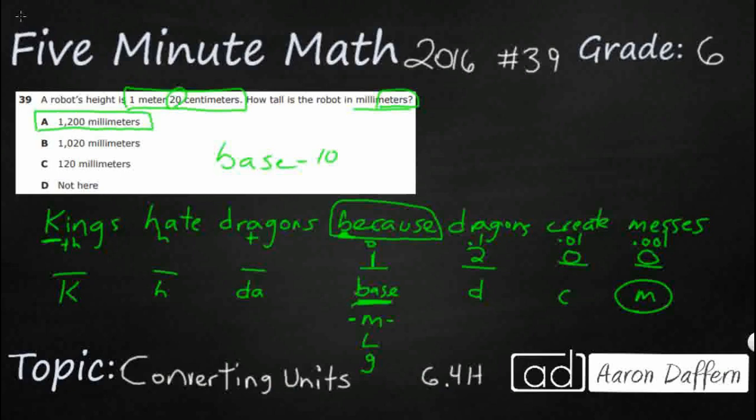Well, basic conversions. We know that one meter equals 1,000 millimeters. This is on our conversion chart. So right now we've already got 1,000 millimeters.